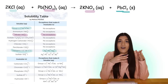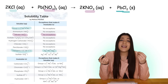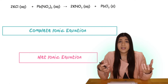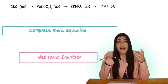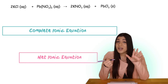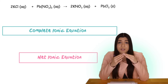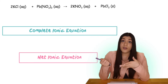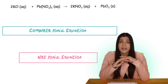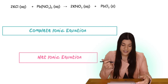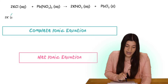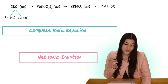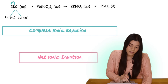Now that we've identified the solubilities for every compound, let's write our complete ionic equation, also known as the total ionic equation. For all compounds that are aqueous — and only the aqueous ones — we break them apart into their separate ions. An ion is just an element with a charge. Solids are left intact and never broken apart. So let's start. Our first aqueous compound is KCl, which we break into its separate ions.